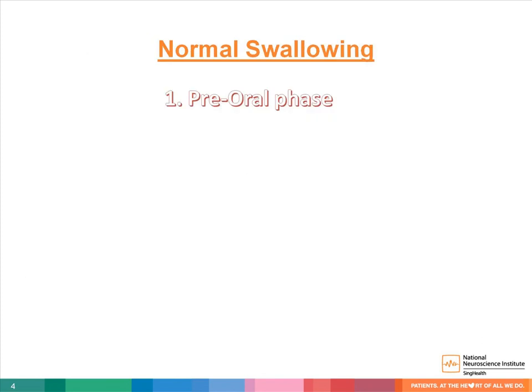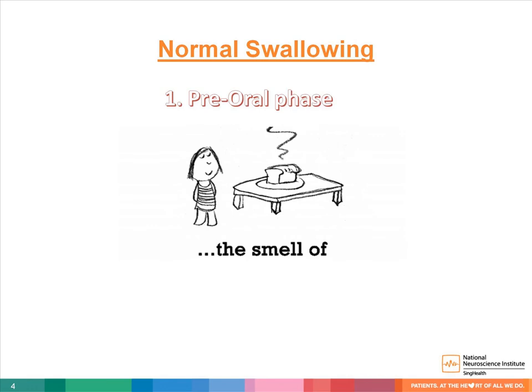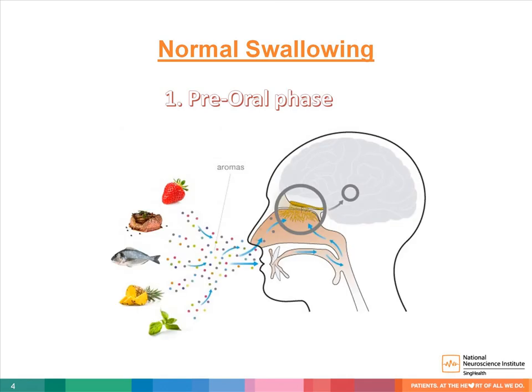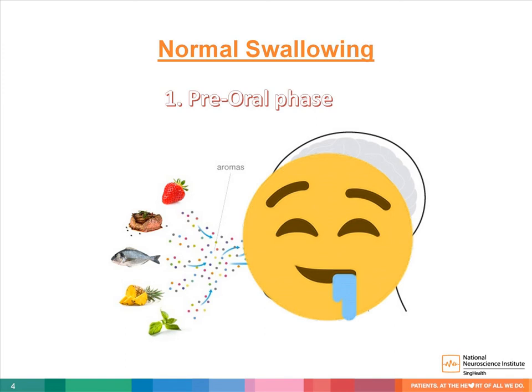Pre-oral phase. Swallowing actually starts before food and drink enters your mouth. Your sense of smell picks up the aromas of the food. An element of cognition is involved because you need to be aware and recognize that it's a smell of food. The salivary glands get activated.